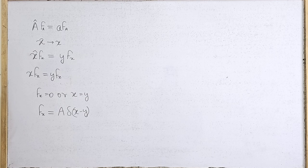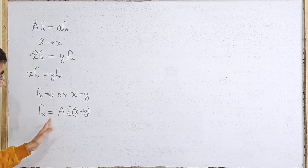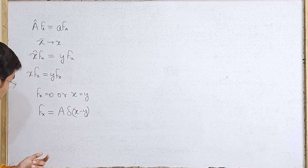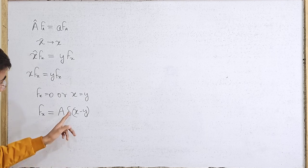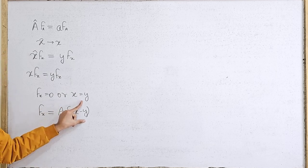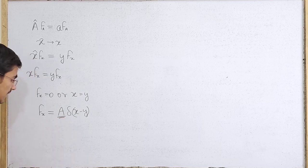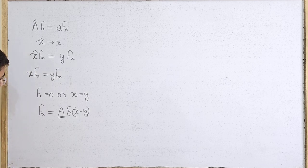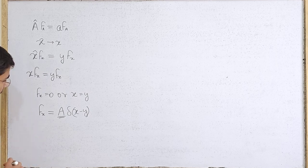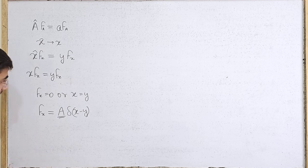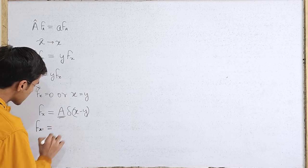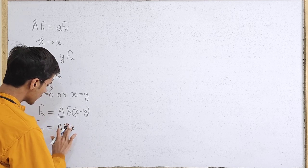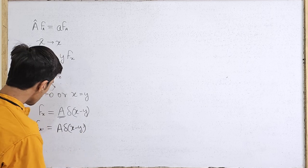If x equals y, then f(x) can be infinite — that is how the delta function is defined after all. If x does not equal y, then f(x) is zero. So we can properly summarize this with the Dirac delta, with a constant here because we need a normalization constant. If you work out the inner product of f_x with some other eigenfunction — let's call it f_{x'} — corresponding to some other eigenvalue y', then f_{x'} must equal a·delta(x minus y').